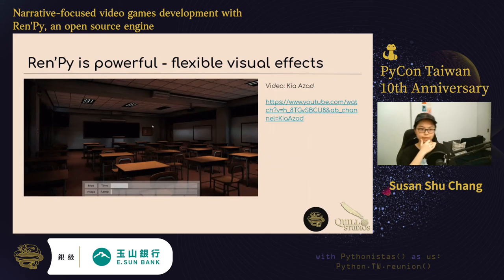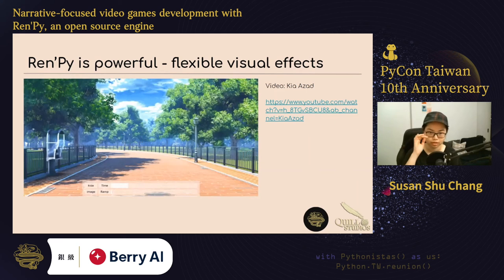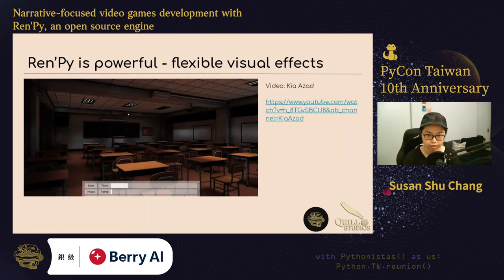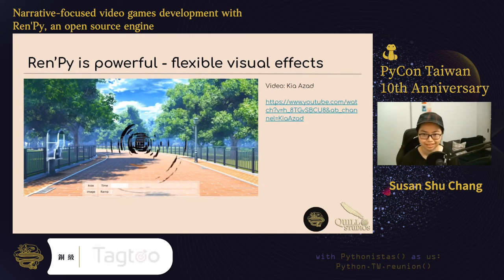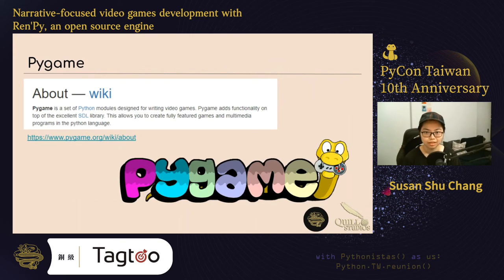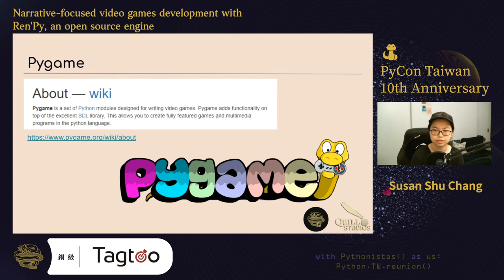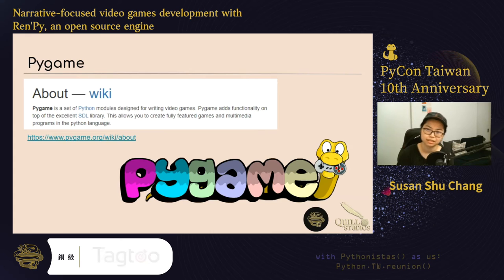Ren'Py 能够做出还蛮多种游戏的。这是一个还蛮基本的 example，就是用 Ren'Py 可以用一些视觉上的效果。我刚刚秀的那些游戏，其实就是以这个为基础，然后就可以做出那种视觉恐怖效果，或者是正常的这种下雪、打雷这种正常的效果。